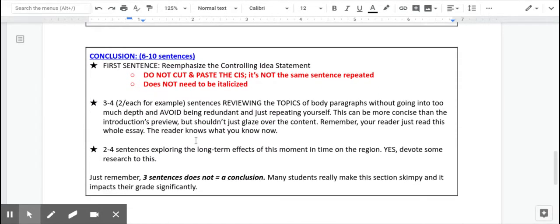Your conclusion. Again, it should be probably about six to ten sentences. If you look at the sample papers, they both do a good job of creating a conclusion that covers all of these elements. Number one, the first sentence should re-emphasize the controlling idea statement. I can't emphasize this enough. It's bold. It's red here. Do not cut and paste your controlling idea statement from the intro into the conclusion. It shouldn't be the same sentence and it doesn't need to be italicized. You have to rewrite it in a way that is aware of the fact that a human being just read your paper and gets what you have just presented.